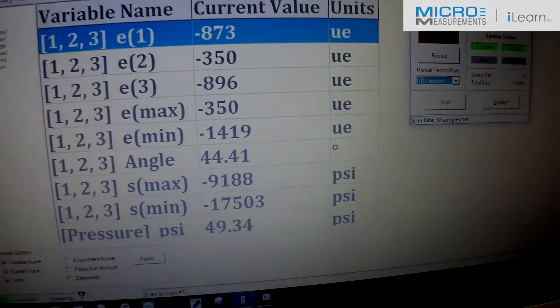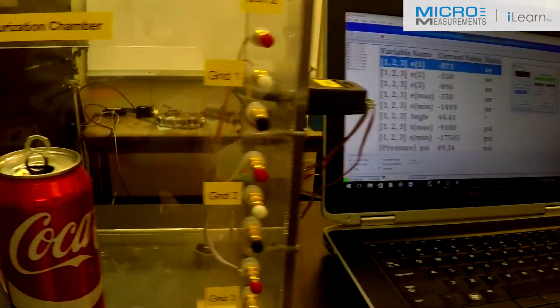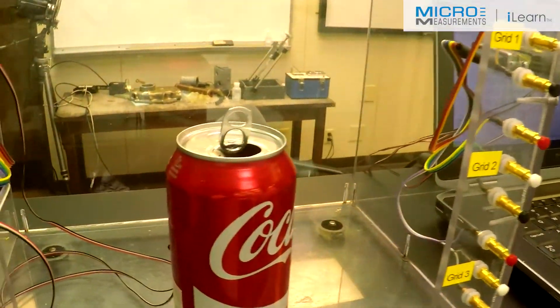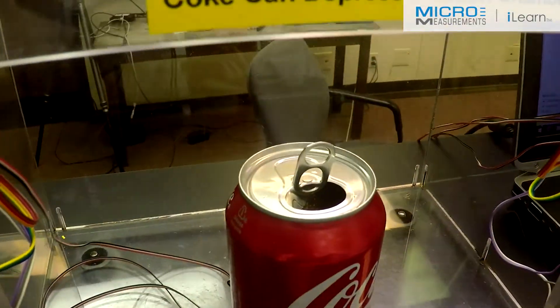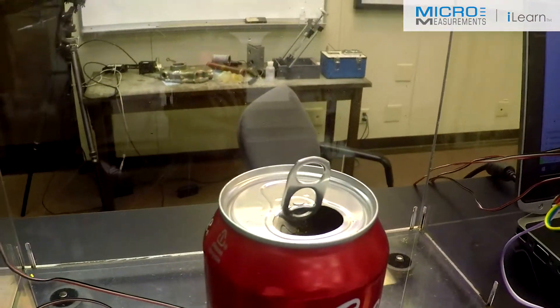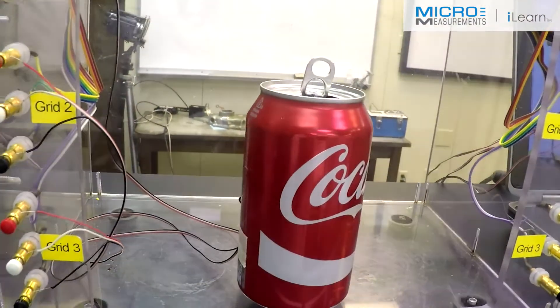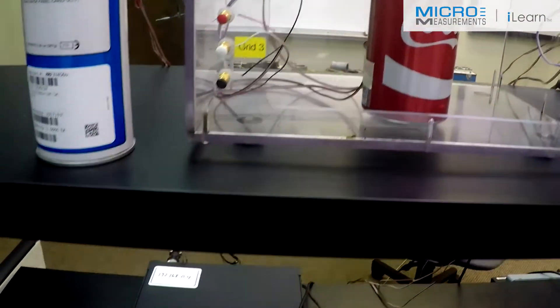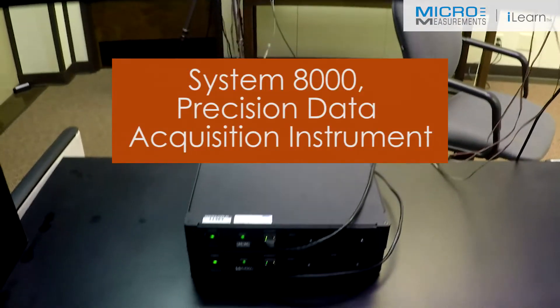So we can clearly see how StrainSmart can be used, not only for the individual strains, but max and minimal principal stresses and strains as well. And this Coke can experiment has been done many times over, and this has just proven that strain gauges work the way that we expect them to.